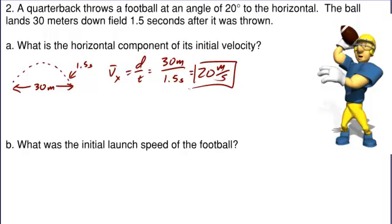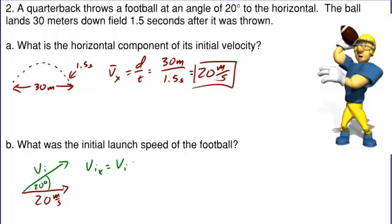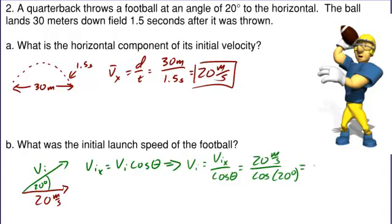Now we're asked to find the initial launch speed of the football. Going back to our vector diagrams, we know in the x direction it was traveling 20 meters per second, and we know it was launched at an angle of 20 degrees. We can use trig to find the initial launch speed — the hypotenuse. The x component equals the initial velocity times the cosine of angle theta. We know vi x and theta, so vi equals vi x divided by cosine of theta, or 20 meters per second over the cosine of 20 degrees, which is 21.3 meters per second.